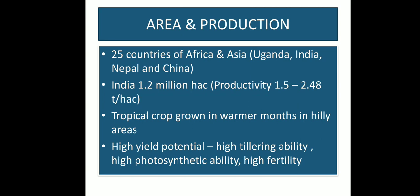Area and Production: It can be grown in about 25 countries of Asia and Africa, of which Uganda, India, Nepal and China are the major growing countries. In India, it is grown at about 1.5 million hectares with average productivity of 1.5 to 2.4 tons per hectare. It has high yield potential due to its special features like responsiveness to high fertility, high tillering ability, and high photosynthetic ability.